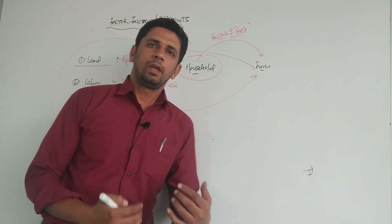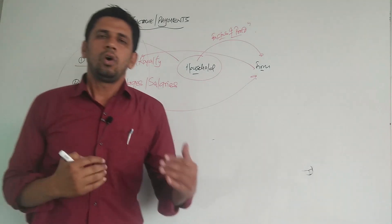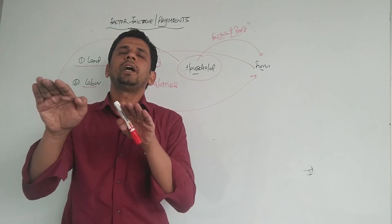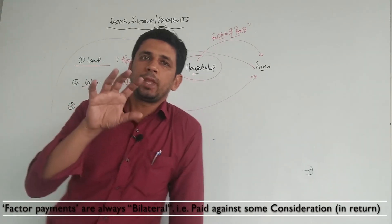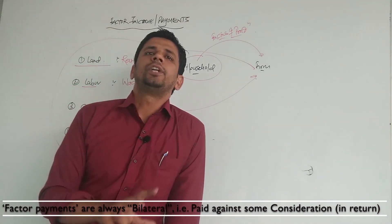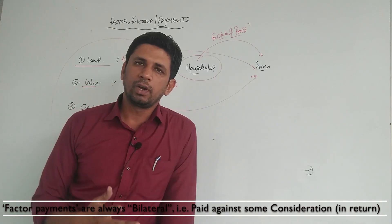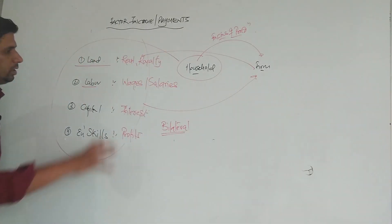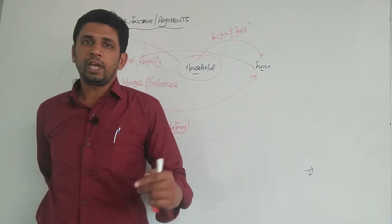So the payments are rent, royalty, wages, salaries, interest, and profit. All these payments are bilateral — on one hand they are taking factors of production, and on the other hand they are paying the amount. For example, if land is taken, rent or royalty is paid against it. These factor payments are always bilateral — always remember these payments are always bilateral, paid against some consideration.